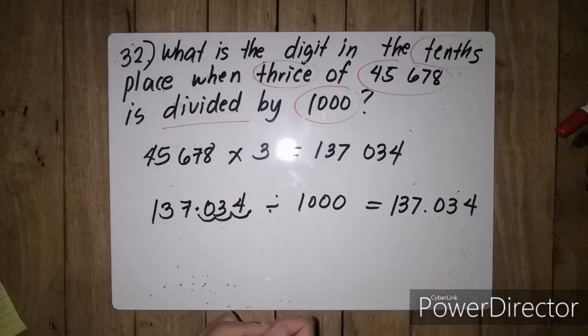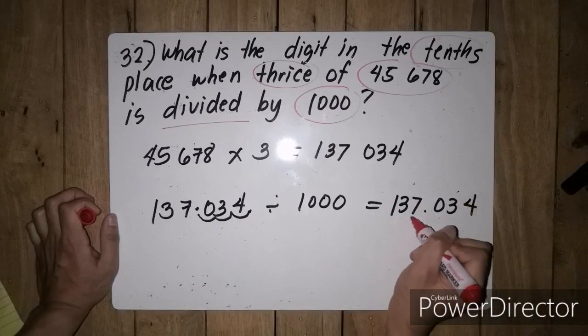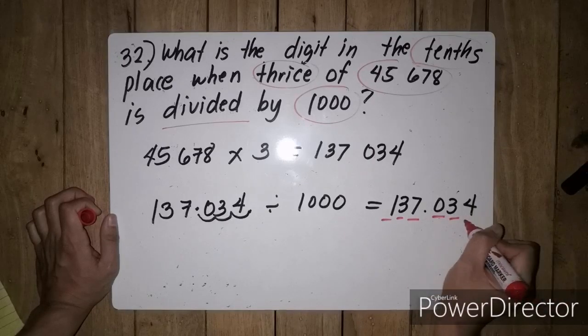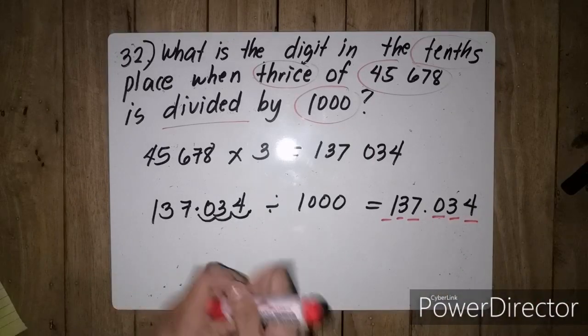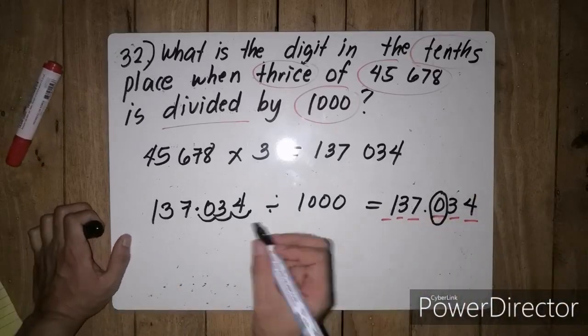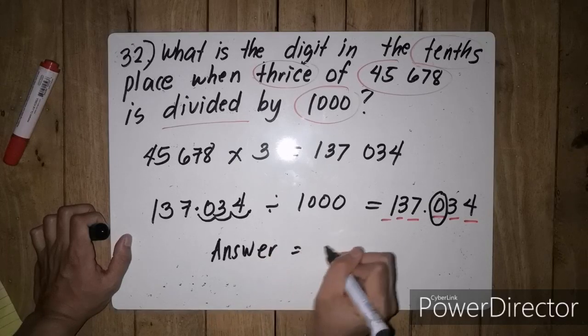But the question is asking, anong digit daw yung nasa tenths place? So alam naman natin, this is ones, tens, hundreds. This is tenths, hundredths, thousandths. So our answer for this problem is 0 since 0 is in the tenths place. So our answer is 0.